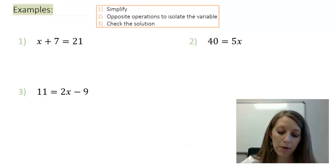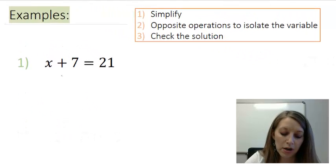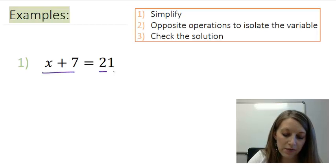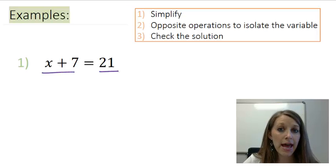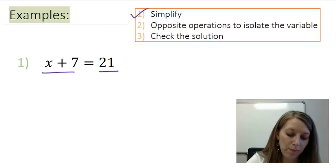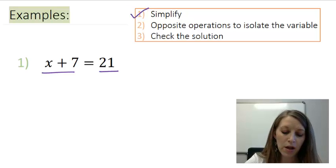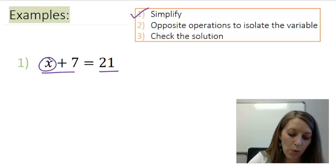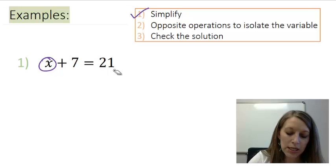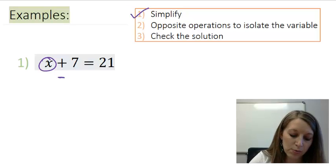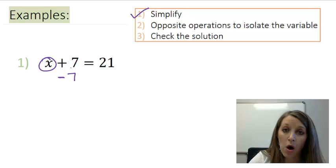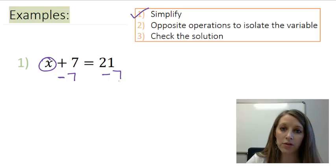Let's start with problem number one here. Our steps are to simplify each side of the equation individually. And I cannot actually do that. So I move past step number one. Step number two is I use opposite operations to isolate my variable. So here I have x and I want to isolate this x. So my opposite operation to get rid of the 7 is to subtract the 7. And my property of equality says if I do it on one side, then I have to do it on the other side as well.